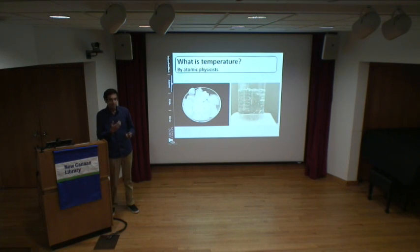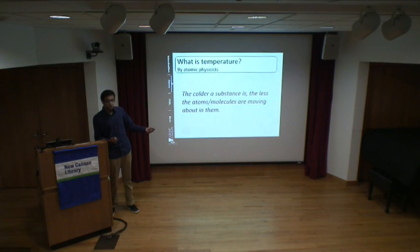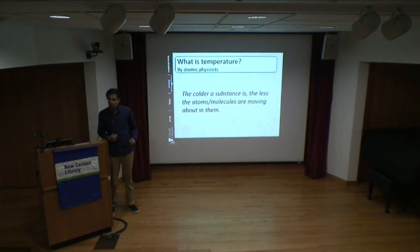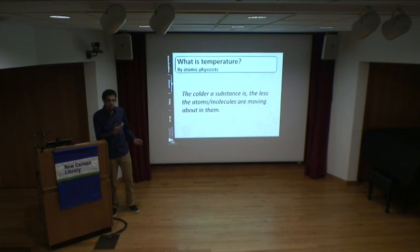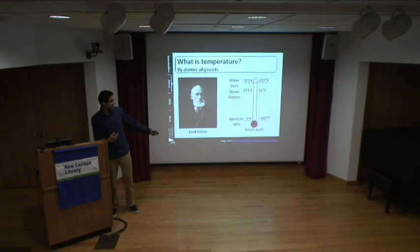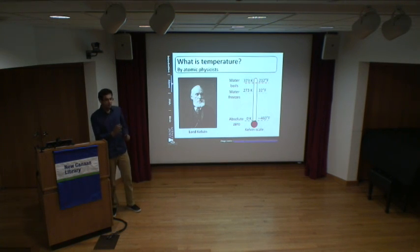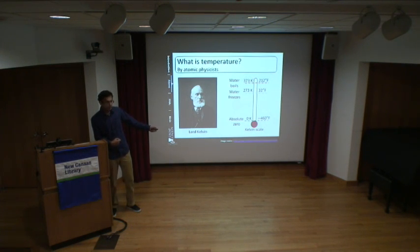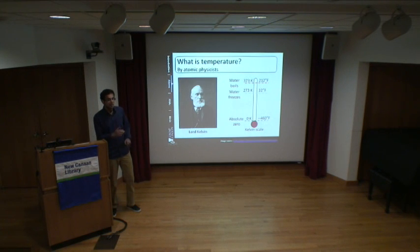In the 1800s, Lord Kelvin developed the Kelvin scale. Water freezes at 273 Kelvin, which corresponds to 32 degrees Fahrenheit. The key feature of this scale is the minimum temperature called absolute zero — zero Kelvin, or negative 460 degrees Fahrenheit — the coldest possible temperature anyone can achieve, because at absolute zero all motion stops.